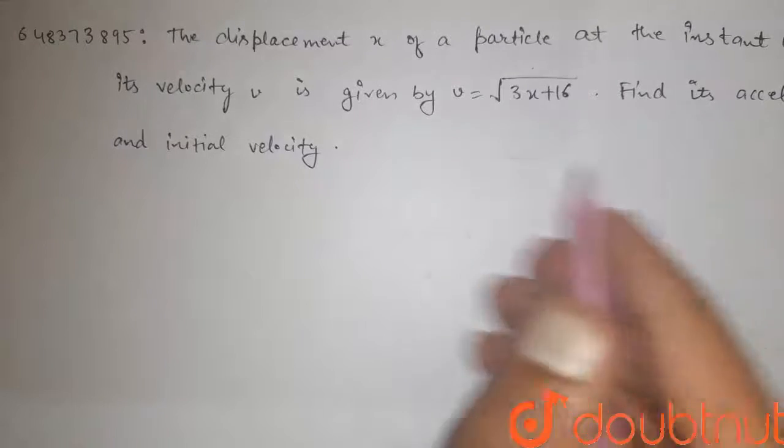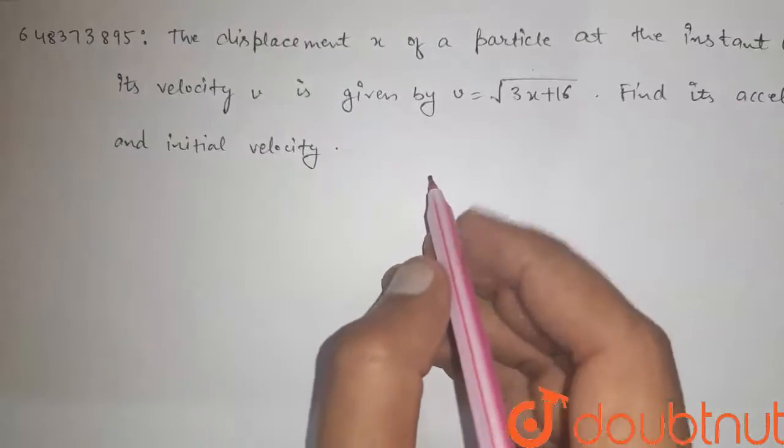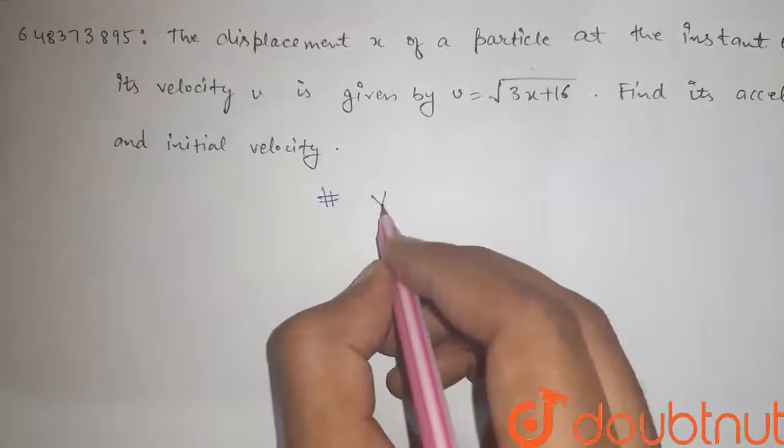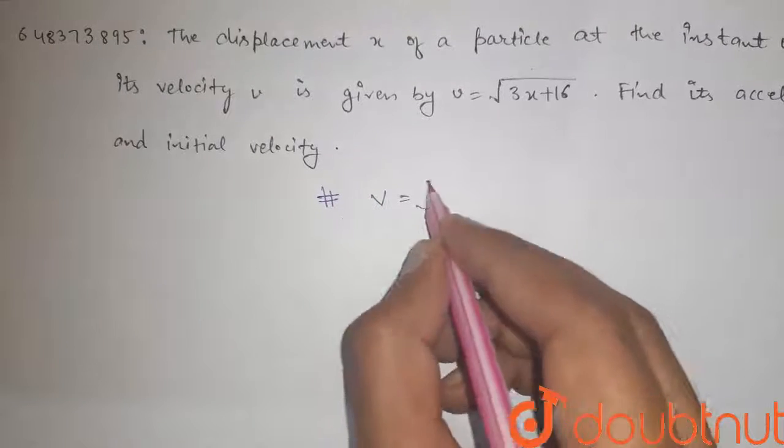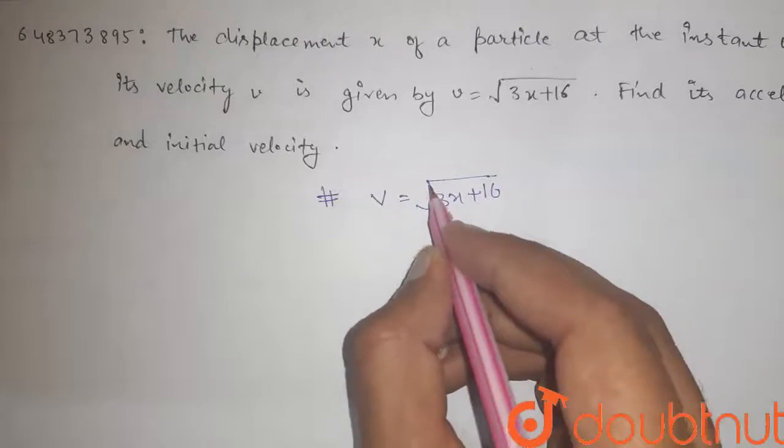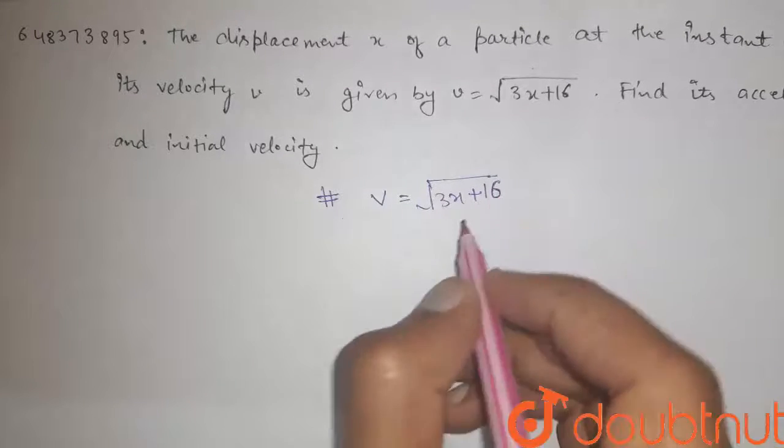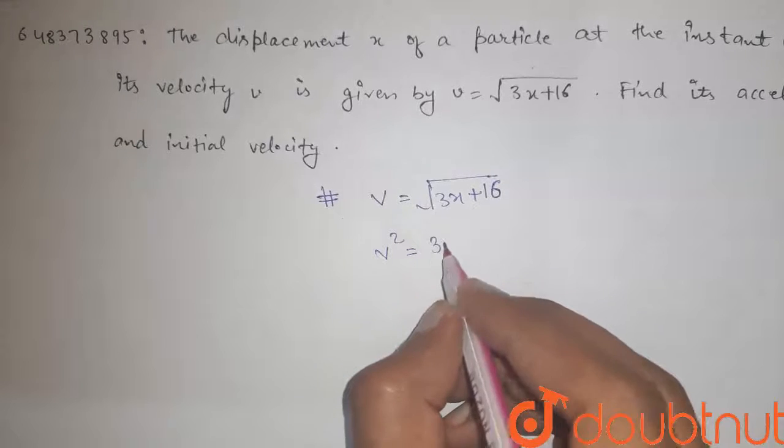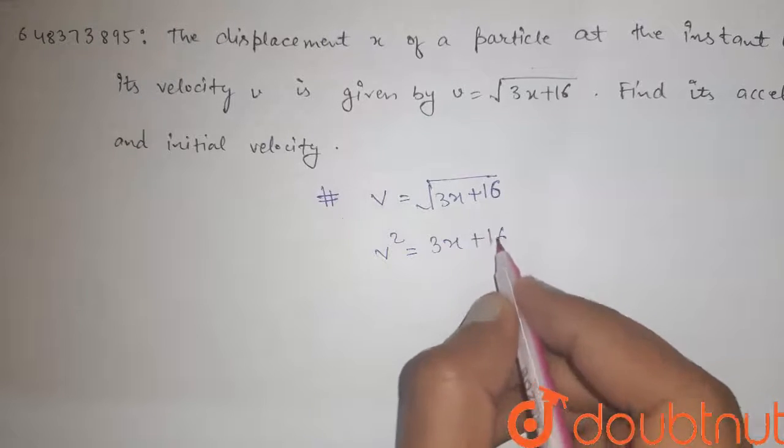So guys, this equation can be written as v equals square root of 3x plus 16. If we square both sides, we get v squared equals 3x plus 16.